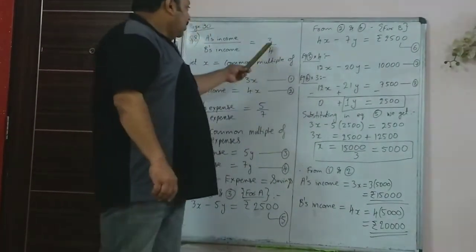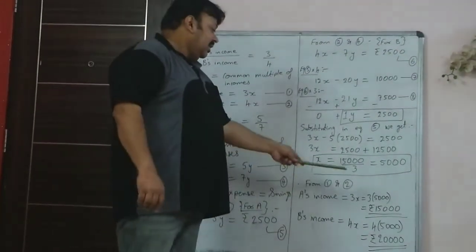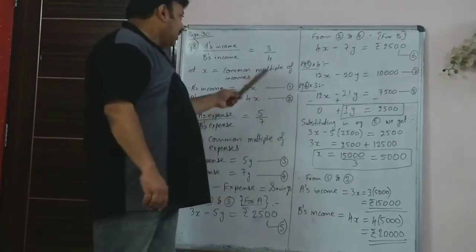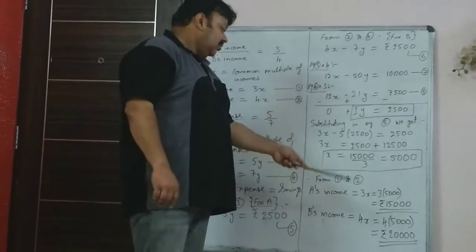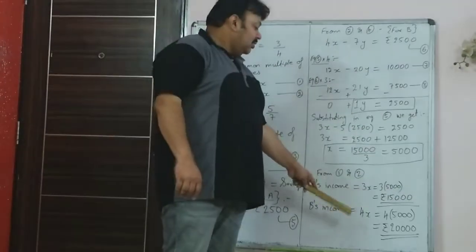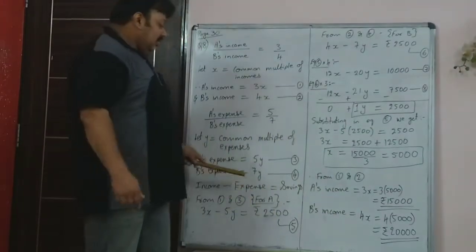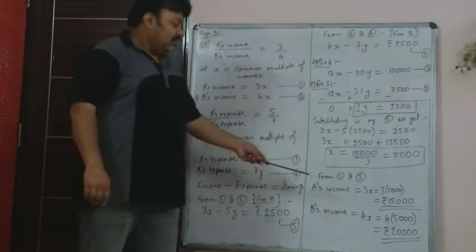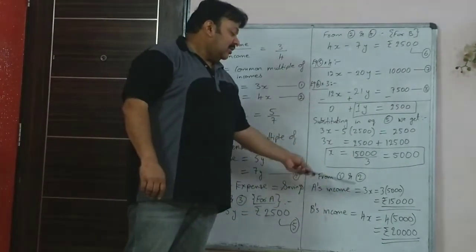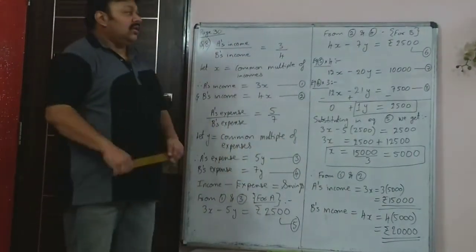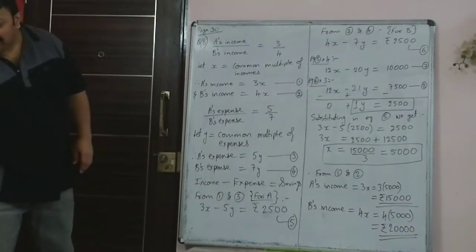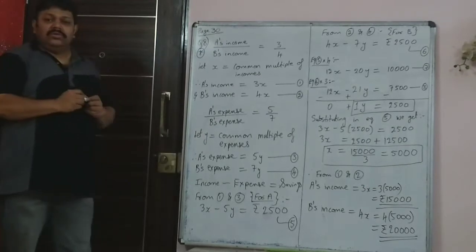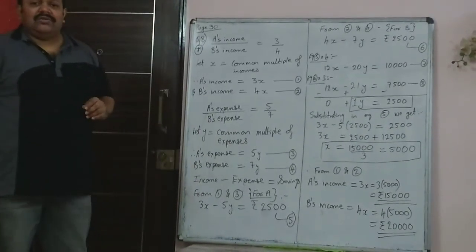So A's income is 3x, which is 3 times 5000, giving 15000. B's income is 4x, which is 4 times 5000, giving 20000. You are only asked for both their incomes. Without writing the ratio of expenses and forming the two simultaneous equations, you couldn't find x. So A's income is ₹15000 and B's income is ₹20000. Mark this as an important sum — these common-sense-based questions are asked in your board exams.